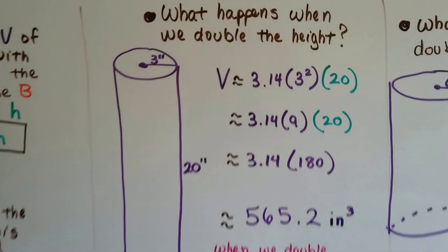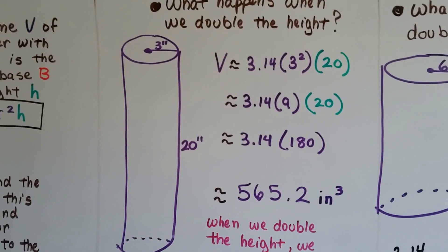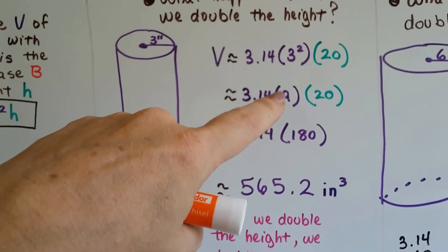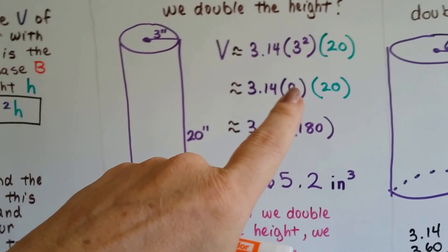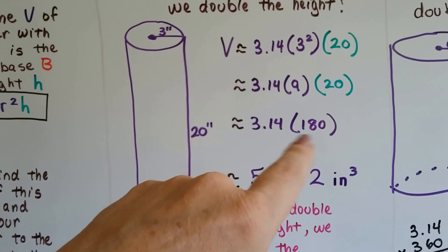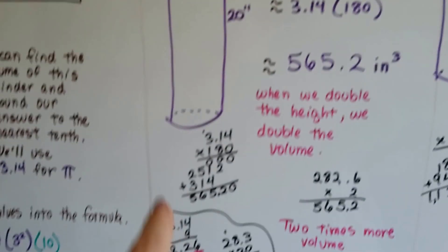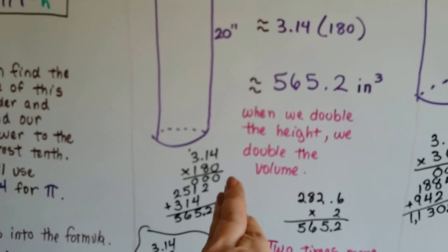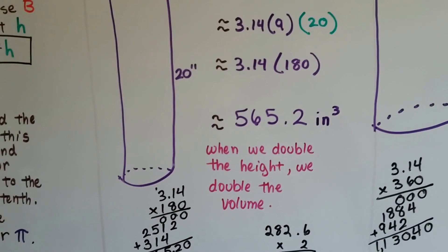Now, what happens when we double the height? We had a 3 inch radius and a 10 inch height. Now we've got our 3 inch radius but a 20 inch height. We've got our 3 inch radius squared. That's a 9. And our 20 inch height drops down. 9 times 20 is just like 9 times 2 adding a zero. So it's 9 times 2 is 18 and we add the zero at the back. So it's 180. Now we multiply it by 3.14 for the pi. And a little math on the side. We get 565.20 because we're rounding it to the nearest tenth. We get 565.2 inches cubed.